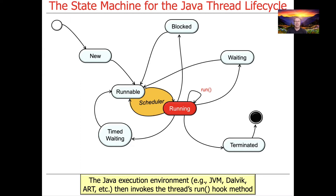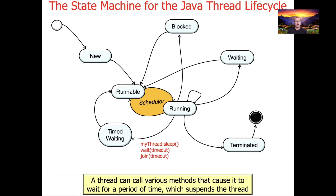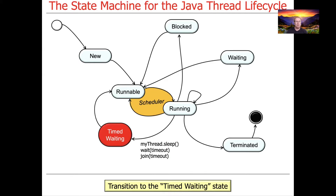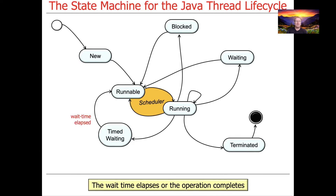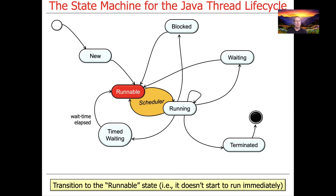One thing a thread can do after it starts to run is something that involves timed waiting. For example, it might call sleep, it might call wait with a timeout, or it might call join with a timeout. These methods will cause that thread to be suspended for some period of time, either when something happens or when the timeout period elapses. When these calls are made in the context of the run hook method, we go into the timed waiting state. After the wait time elapses or the operation occurs, we continue by becoming runnable again.